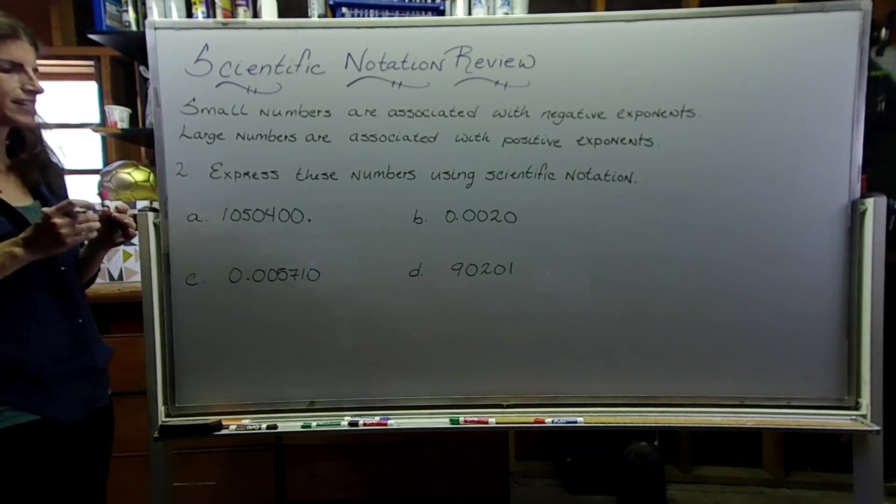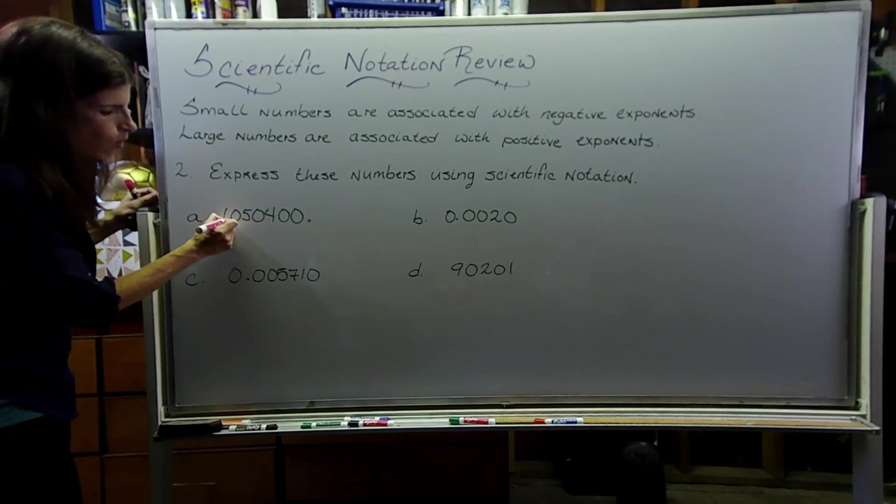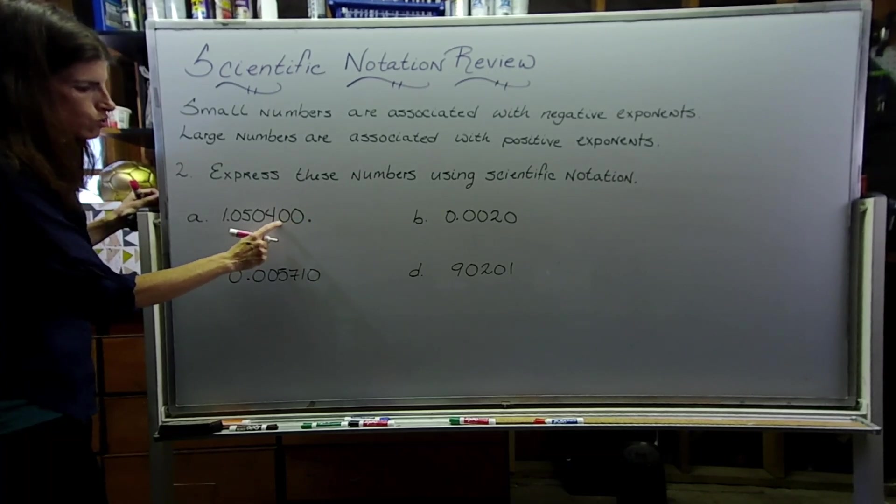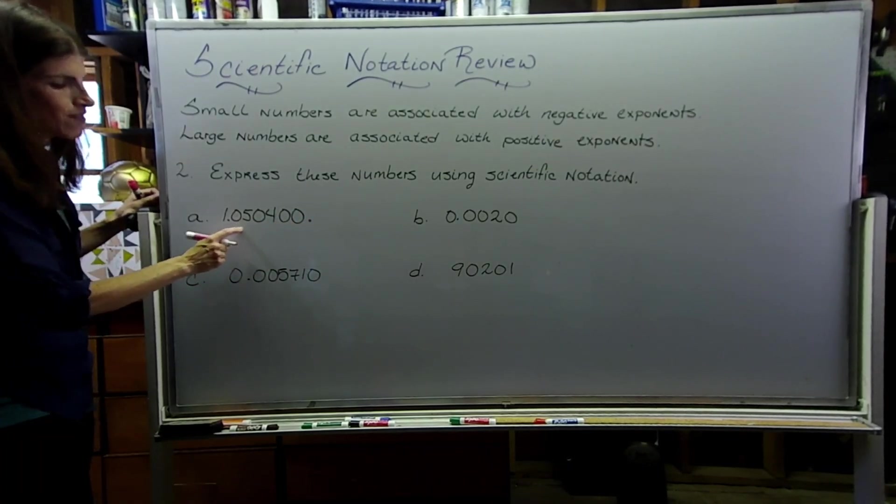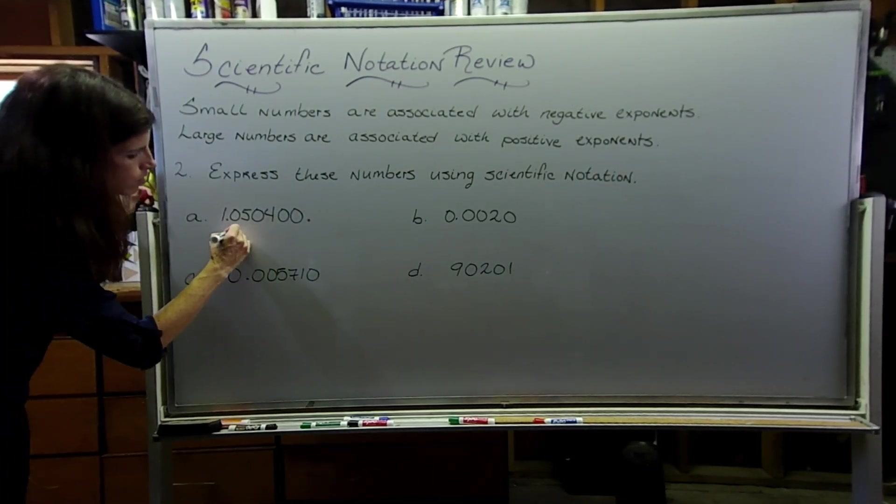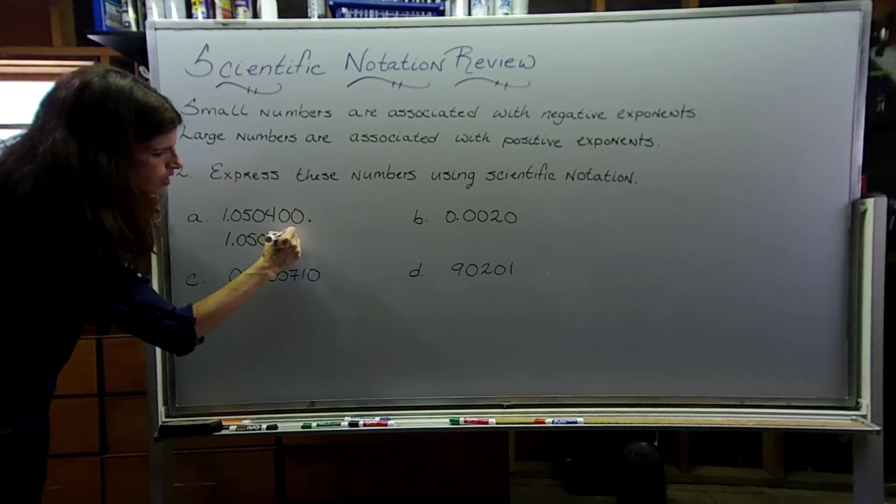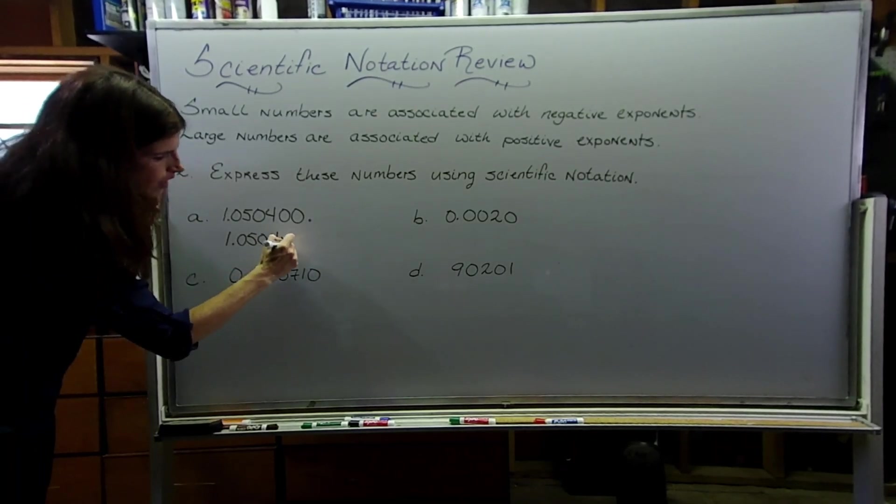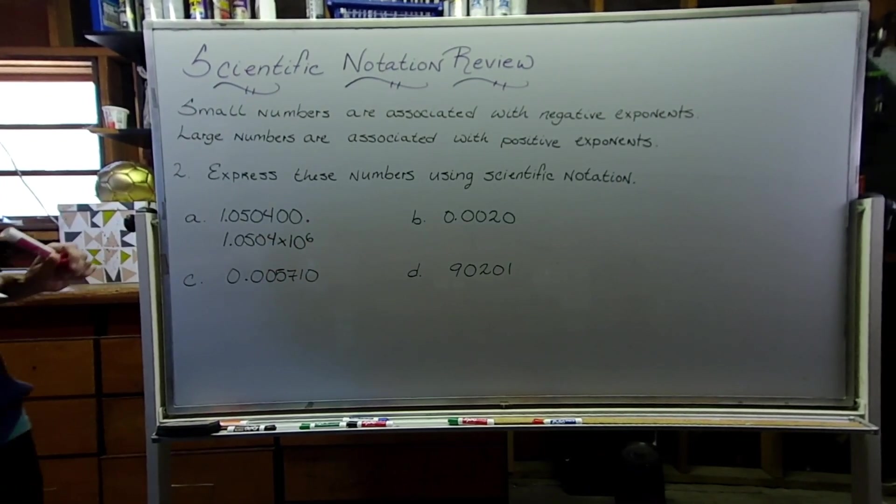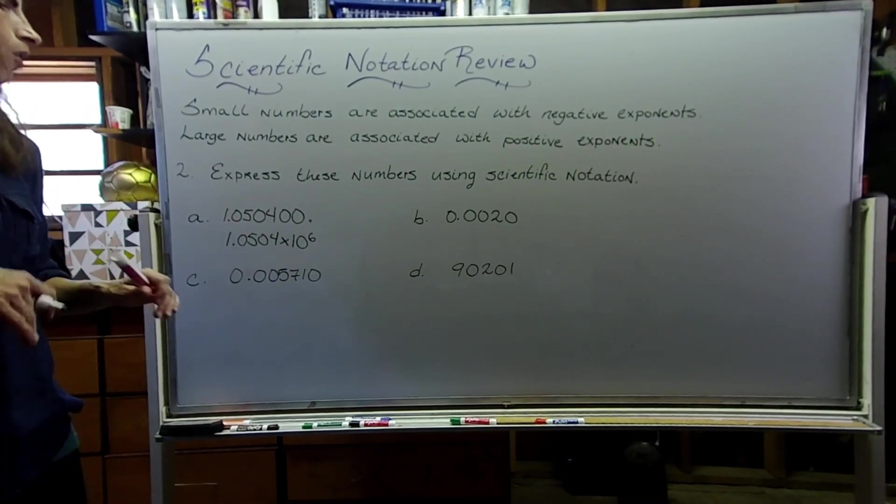So I'm going to have to move the decimal place all the way to here. And if I do that, that's 1, 2, 3, 4, 5, 6 jumps. So therefore, I'm going to write my number as 1.0504 times 10 to the sixth. So we're going to talk about sig figs in a second here, and you're going to understand why I left those zeros off. But hold up for that.